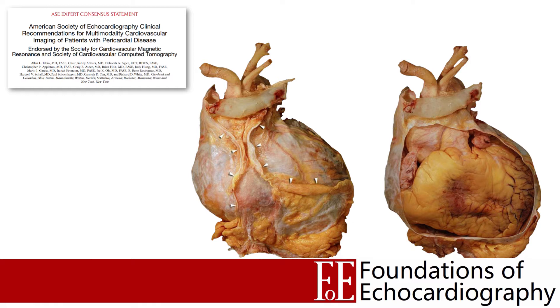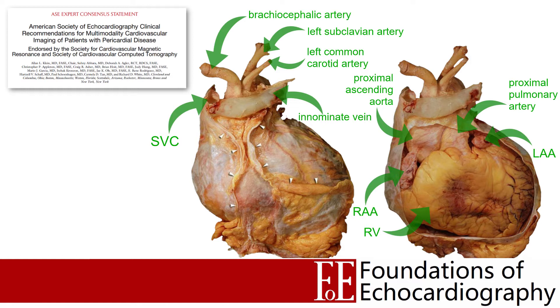Let's begin by revising the anatomy. The pericardial sac surrounds the heart and proximal great vessels. Here we can see a heart looking at the anterior surface. On the left we have the pericardium intact, whilst on the right a large window has been cut to show the heart underneath. The white arrows mark out where the pericardium has been dissected off the sternopericardial ligaments, which attach the pericardium to the front of the chest.